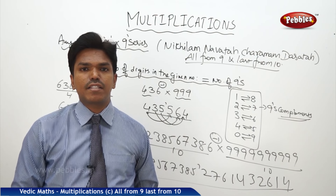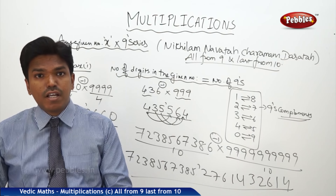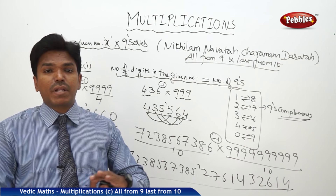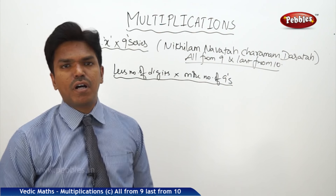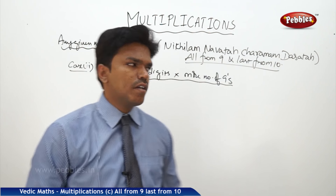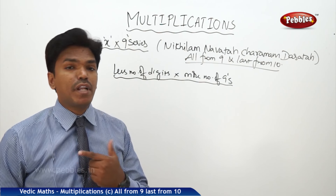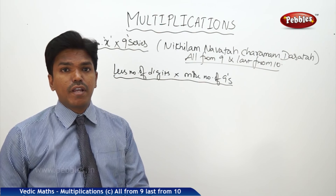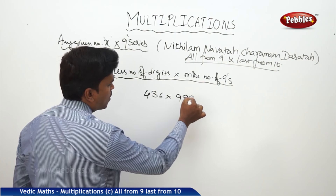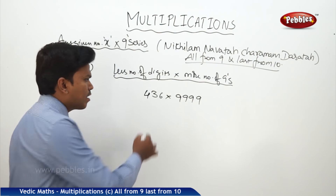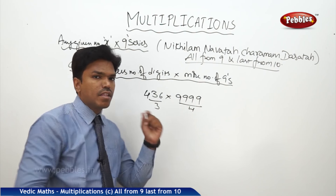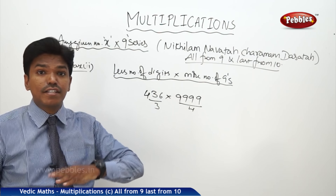Now we will see the second case: less number of digits multiplied by more number of 9's. Suppose I want to multiply 436 into 9999. There are 3 digits but 4 nines — less digits, more nines.